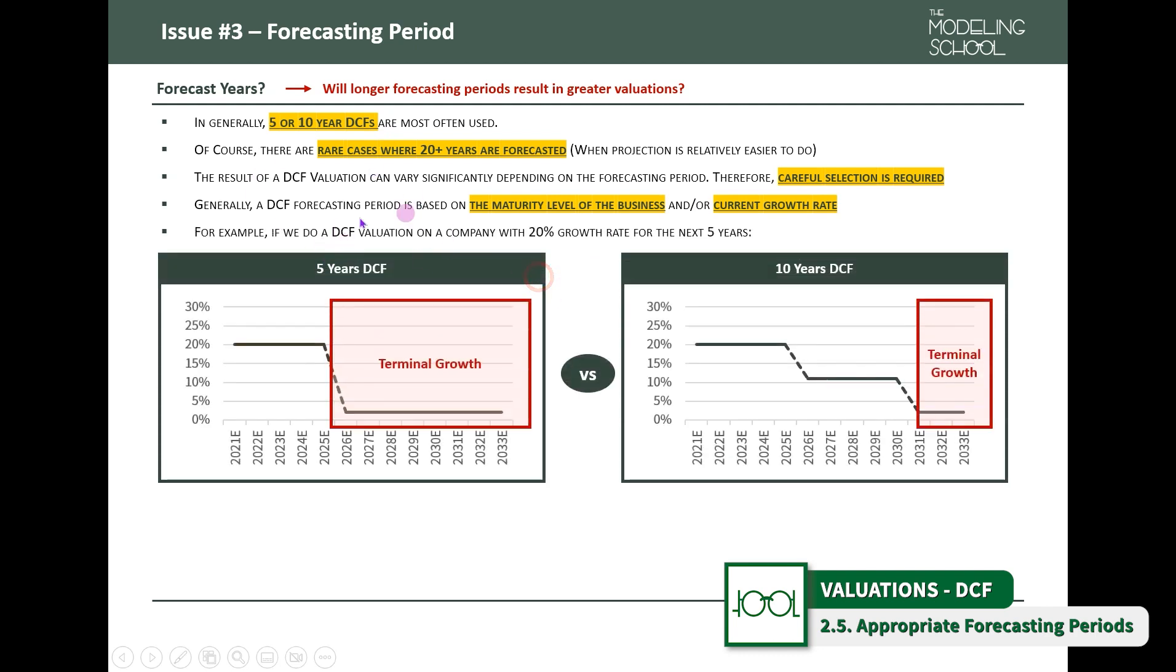And generally, as told before, DCF forecasting period is based on the maturity level of the business. So for example, let's say that a company will grow 20% for the next five years. And then, all of a sudden, we're assigning a terminal growth rate of 1% from year 6.